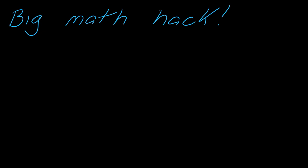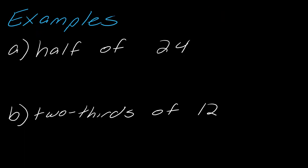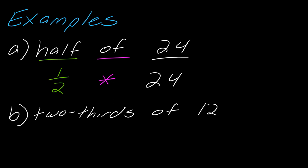I want to start by telling you about a trick or hack that is very helpful to know when you have word problems: very often, the word 'of' means multiply. Let's start with the first example — half of 24. 'Half' means one-half, and 'of' means multiply, so it's one-half times 24. What is half of 24? That is 12.